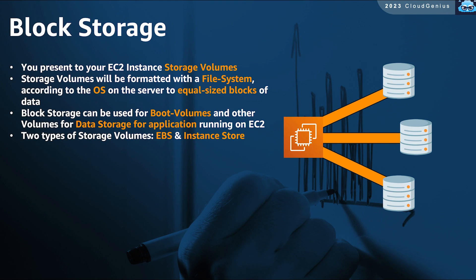Let's focus on block storage. You need to present to your EC2 instance one or more storage volumes. These disks or volumes will be attached to the EC2 operating system. The operating system would be able to format them into partitions with their file system and format them into groups of small equal-sized blocks. That represents the minimum readable or writable data size on the disk. These disks will be hosting the boot volume from which your Windows or whatever operating system boot files are kept, as well as other disks or volumes to store different datasets.